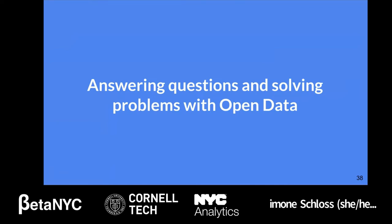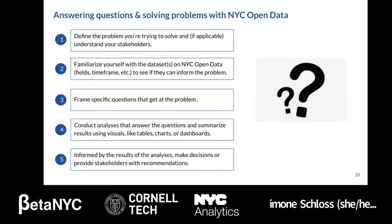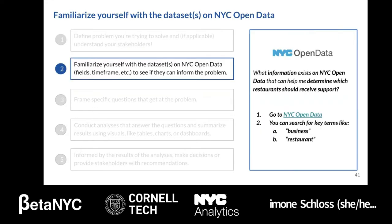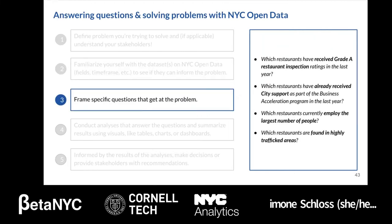How does one go about answering a question or solving a problem using New York City open data? There are a series of steps to follow. The first step is to define a problem. Let's imagine you're working for a New York City government agency tasked with implementing a support program for restaurants — distributing small grants and loans — and you're in charge of deciding which restaurants receive funding. How might you use New York City open data to support your work? We can see which open data sets might help inform the problem by searching for keywords like 'business' or 'restaurant.'